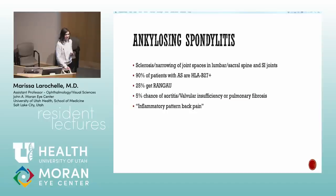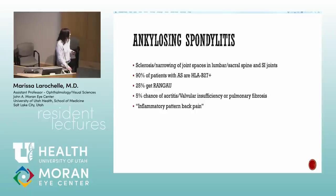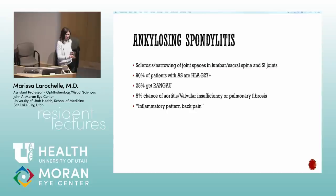RNGAU stands for recurrent non-granulomatous anterior uveitis. A lot of times we just say NGAU, but if you hear recurrent alternating non-granulomatous anterior uveitis, it's B27 about 99% of the time. Systemic risks that can kill you include aortitis, valvular insufficiency, and pulmonary fibrosis.